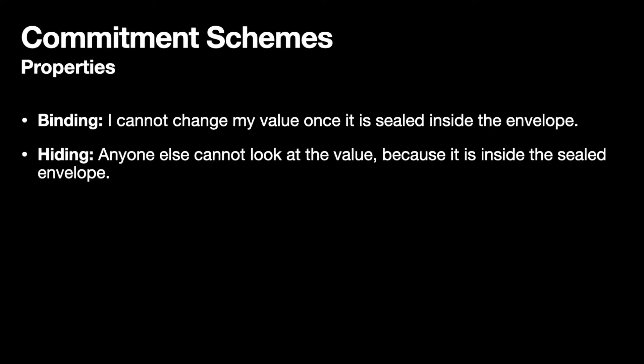The two properties that we care about for our commitment scheme are called binding and hiding. First, binding. In our envelope example, when I put my value inside the envelope and seal it, I can't later change the value that I had committed to. The hiding property means that anyone who wants to look at the commitment can't infer or learn anything about the value inside — in the envelope case, because it is sealed inside.